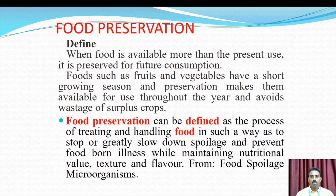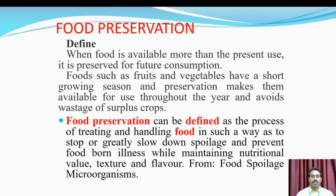When food is available more than the present uses, it is preserved for further consumption. Foods such as fruits and vegetables have short growing seasons, and preservation makes them available throughout the year, avoiding wastage of surplus crops. Food preservation can be defined as the process of treating and handling food in such a way as to greatly slow down spoilage and prevent foodborne illness, while maintaining the nutritional value, texture, and flavor from spoil microorganisms.